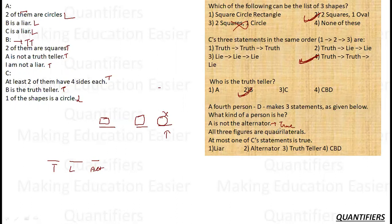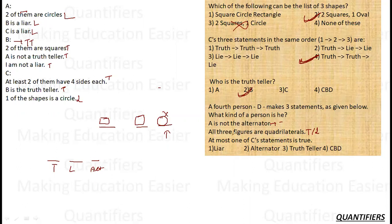D's second statement is: all three figures are quadrilaterals. Two of them are definitely quadrilaterals, but I'm not sure about the third, so this statement could be true or false. D's third statement is: at most one of C's statements is true. But we know C's two statements are true, so 'at most one is true' is a lie. Since D's first statement is definitely true and his last is definitely a lie, D must be an alternator — he cannot have all truths or all lies.